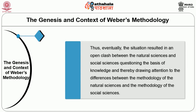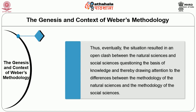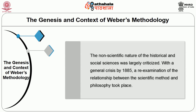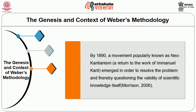The situation resulted in an open clash between the natural sciences and social sciences, questioning the basis of knowledge and drawing attention to differences between their methodologies. The non-scientific nature of historical and social sciences was largely criticized. With the general crisis by 1885, a re-examination of the relationship between the scientific method and philosophy took place. By 1890, a movement known as Neo-Kantianism — a return to the work of Immanuel Kant — emerged to resolve the problem, questioning the validity of scientific knowledge in itself.